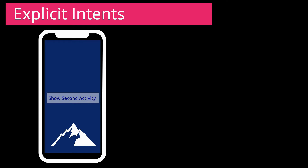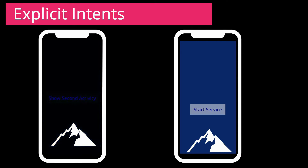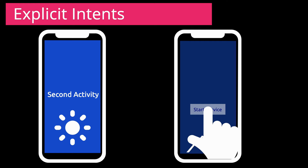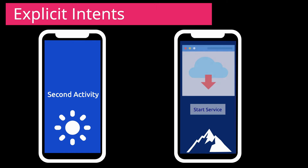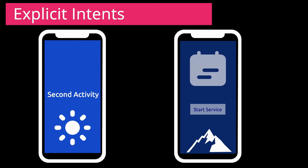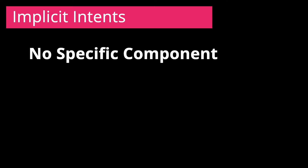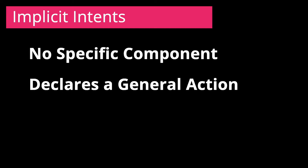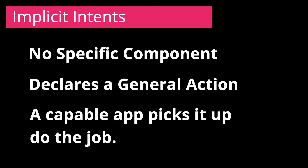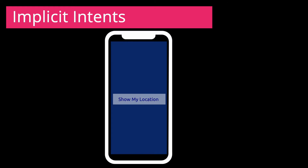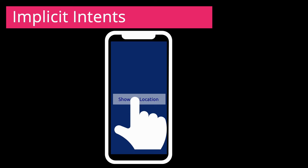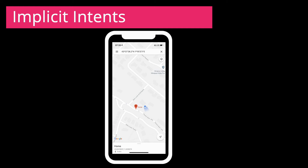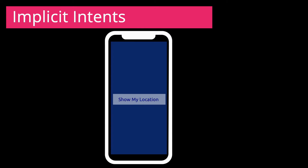For example, you might start a new activity within your app in response to a user action, or start a service to download a file in the background. Implicit intents do not name a specific component but instead declare a general action to perform, which allows a component from another app to handle it. For example, if you want to show the user a location on a map, you can use an implicit intent to request that another capable app, such as Google Maps, show a specific location on the map.